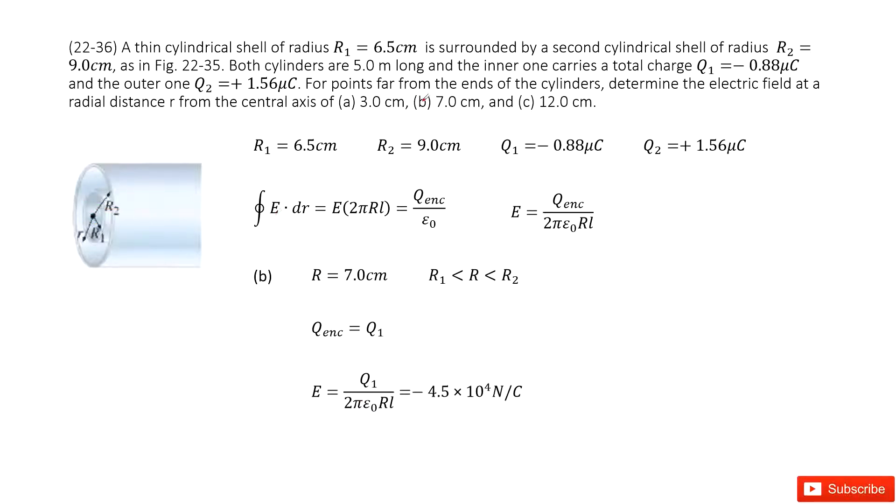The second part is r = 7 centimeters. So 7 centimeters is between R1 and R2. We can draw a Gaussian surface like this one. Now we still apply Gauss's law. E, the electric field times the Gaussian surface, equals enclosed charge divided by epsilon naught. We write the electric field function. Looking at this Gaussian surface, what is the charge enclosed? Just the inner charge. This is Q1. So we replace Q_enc as Q1 and then input all the quantities. Get the answer.